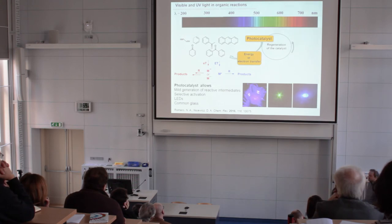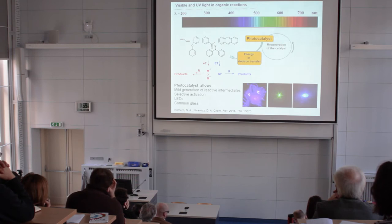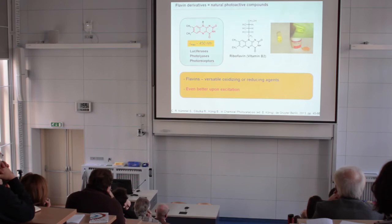And this is advantageous for us because we can use sources of visible light for this type of chemistry as we do also in our laboratory. Reactions occur under mild generations of reactive intermediates, thus they are selective and we can use also common black glasses. And this type of chemistry is called photoredox catalysis.